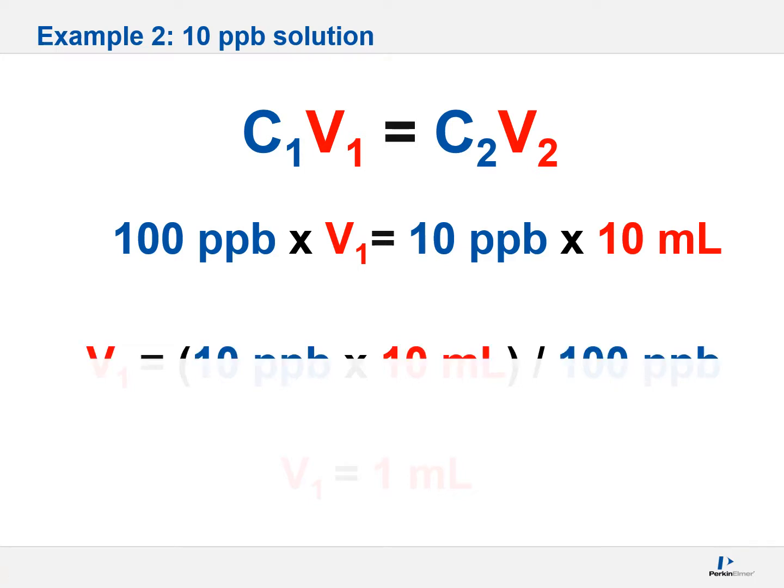Algebraically manipulate the equation. You will end up with something that looks as follows. And finally, the V1 of 1 milliliter. This means that you need to take 1 ml of that 100 ppb stock solution and bring it up to 10 mls in your solvent of choice in order to create a 10 ppb solution.